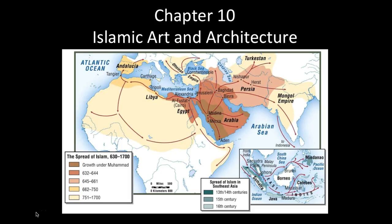We're starting off with Islamic art and architecture. On the screencast I'm going to do historical context. First, let's take a look at this map — this is the extent of the spread of Islam up until 1700, so this map dates between 630 CE and 1700. You can see in this brown area that Mecca is in Saudi Arabia, and Medina — these are two very important cities for the religion of Islam.